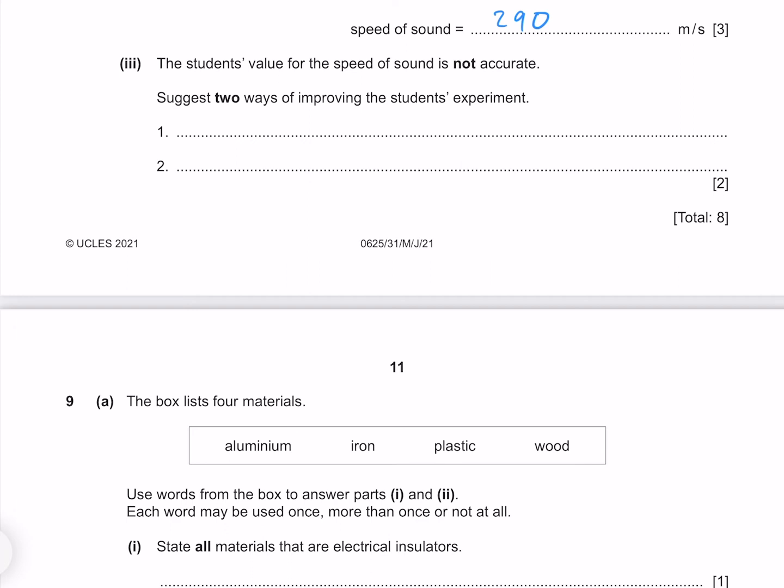The student's value for the speed of sound is not accurate. Suggest two ways of improving the student's experiment. There are a few ways that the students could do this. First of all they could stand further from the wall, which would reduce their error from their reaction time in proportion to their measurements. Secondly they could repeat and average.